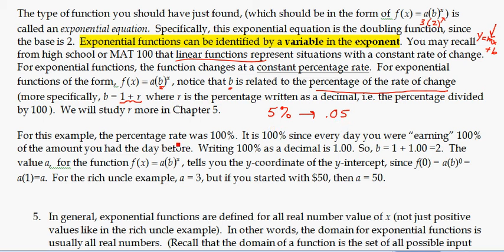So, but for this example, for our rich uncle example, the percentage rate was 100%, because we were taking the full amount, the full amount of money we had. We started with $3, and we got the full 100% of it. We earned that constant percentage. So we earned 100% every time.